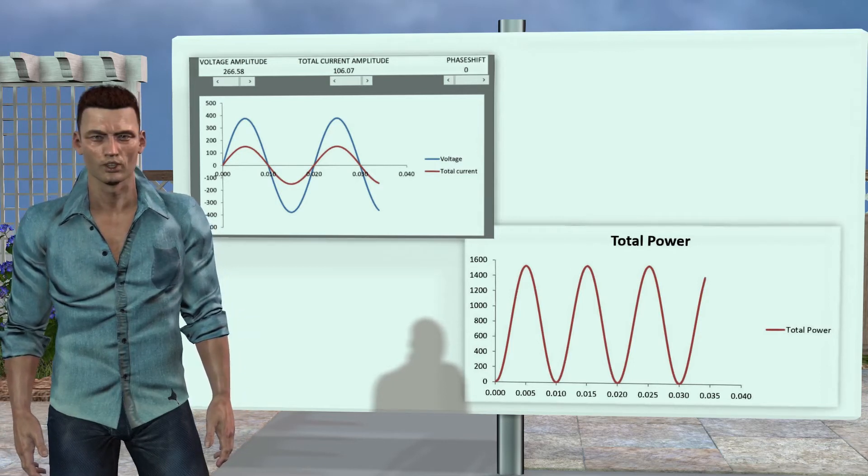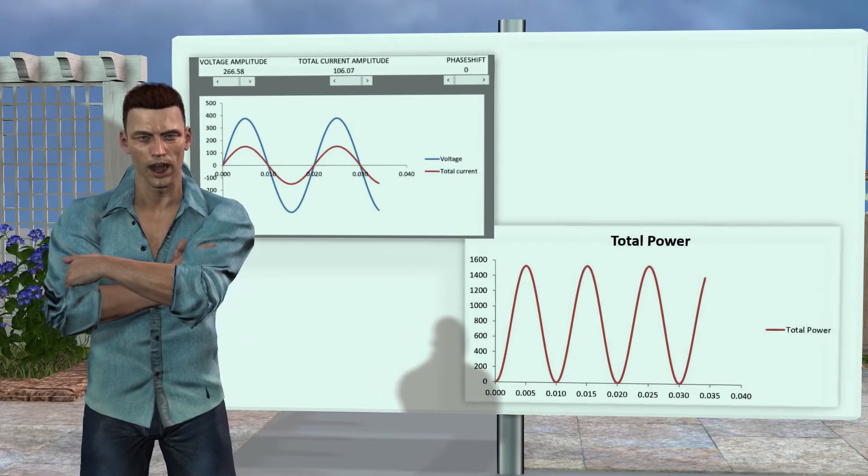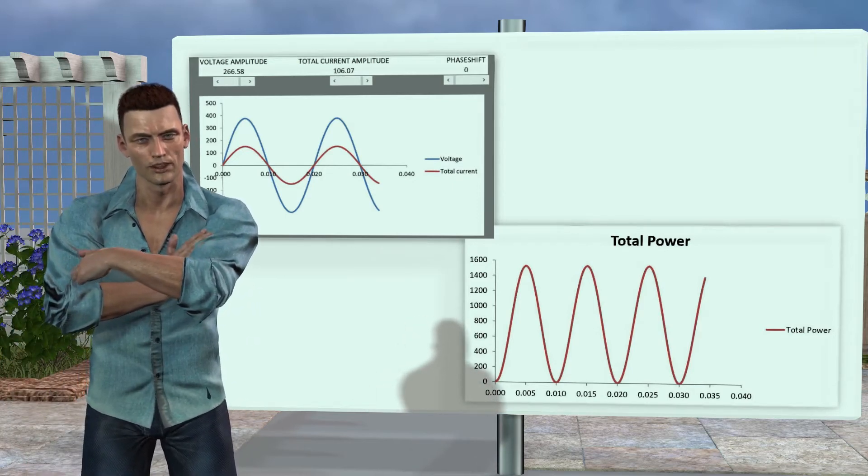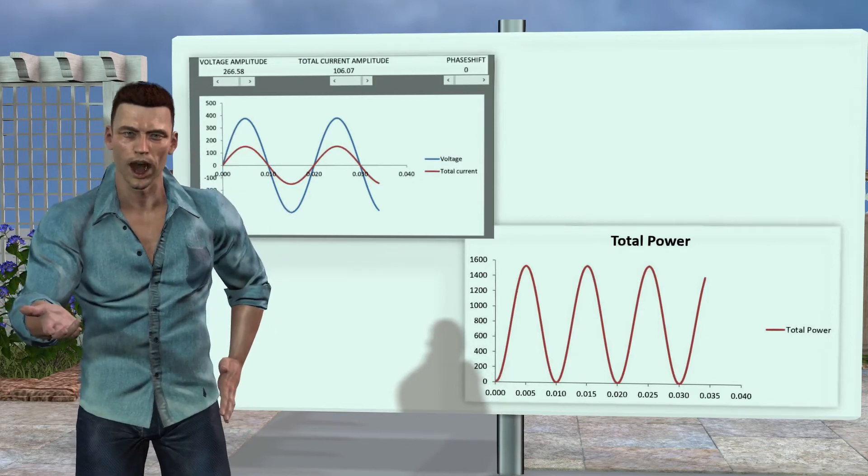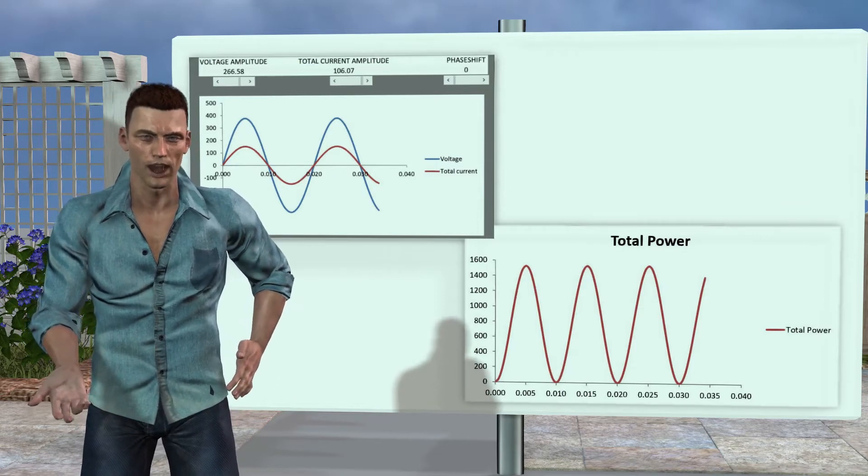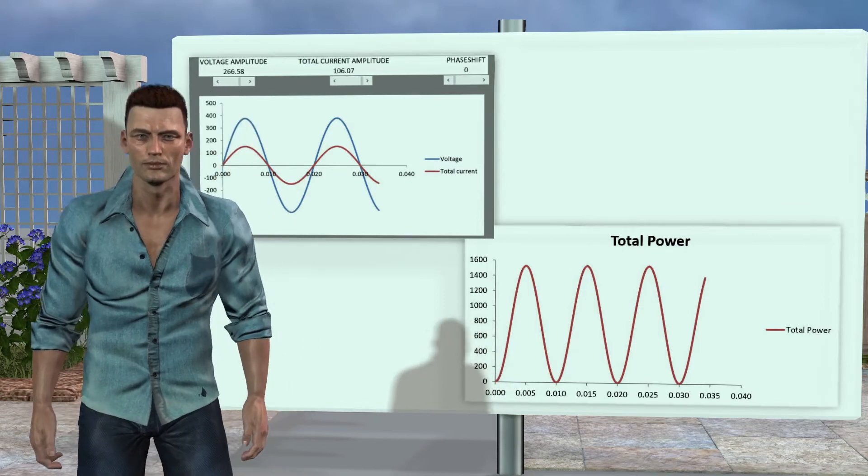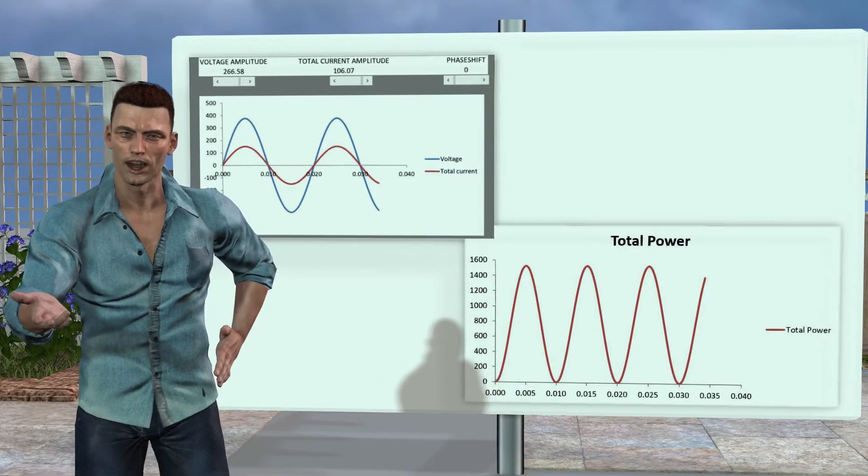Since voltage and current have the same sign at all times, both are positive if they are above the horizontal axis or negative if they are below the horizontal axis, their product will always be greater than or equal to zero. In other words, the graph of the instantaneous power is always above the horizontal axis, although, as we can see, it oscillates between zero and a maximum value.